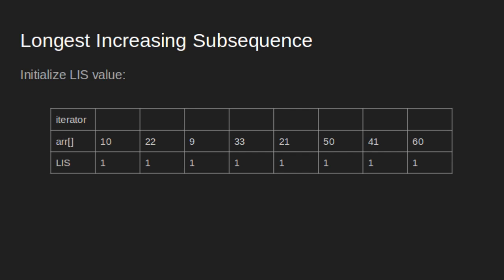We have an array ARR with the sequence 10, 22, 9, 33, 21, 50, 41, and 60. LIS is an array that stores the length of the longest increasing subsequence ending at the corresponding index of the given array ARR. We initialize the LIS array with 1, as a single element itself is an increasing subsequence of length 1.